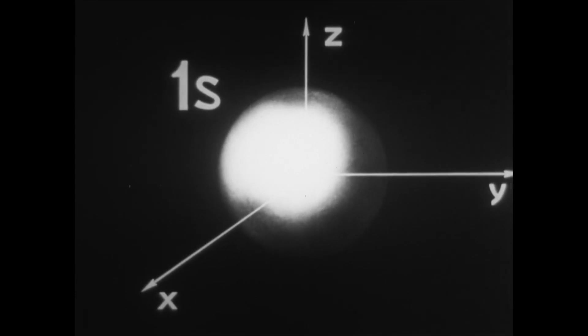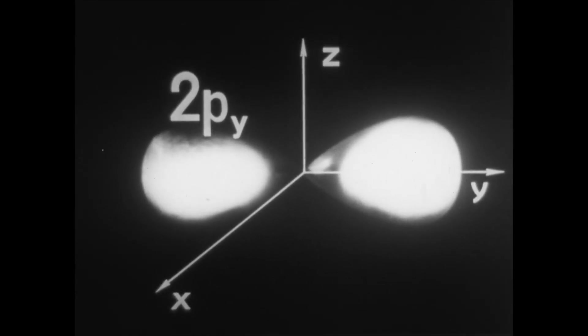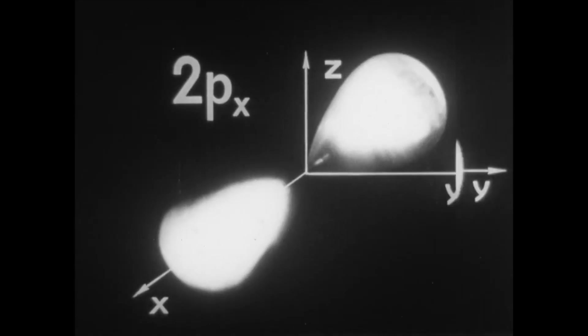Electronic clouds for different electron states are uniquely oriented in the coordinate system. The notation of orbitals contains information about the shapes of the surfaces that bound the space where most of the electron cloud is contained.